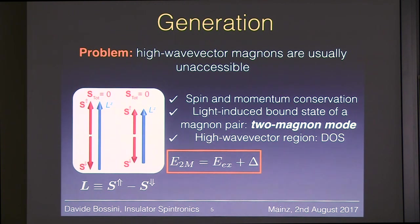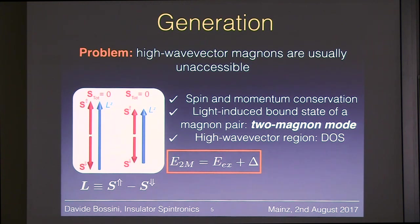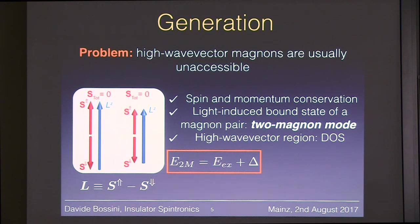Regarding the argument about light and angular momentum: light typically gives delta L equals 1 on a transition. In this case, however, there is no orbital angular momentum, no spin-orbit coupling. The only action of light on the magnetic system is a perturbation of the exchange interaction, which results in the generation of pairs of magnons. This concept is not novel — it is a very well-known story to people involved in Raman spectroscopy.